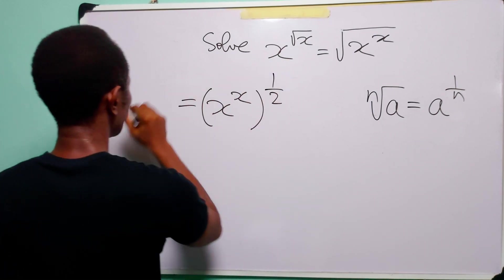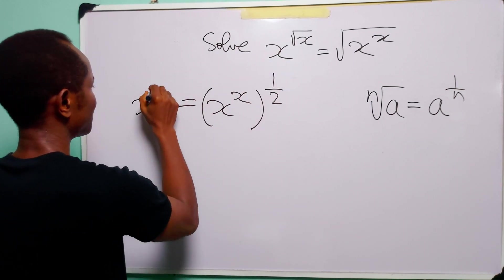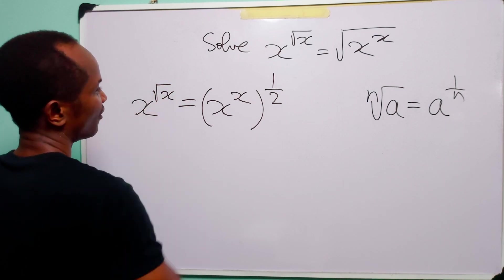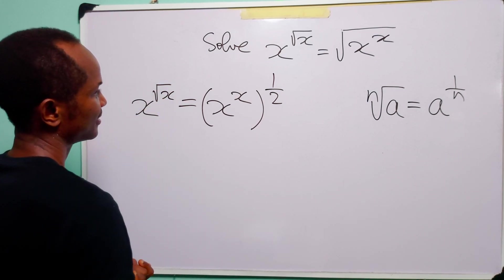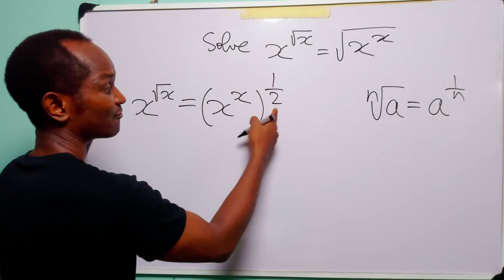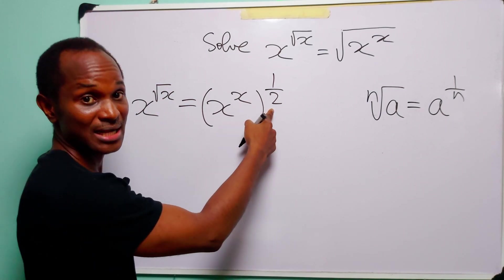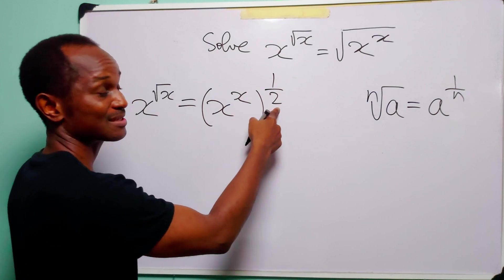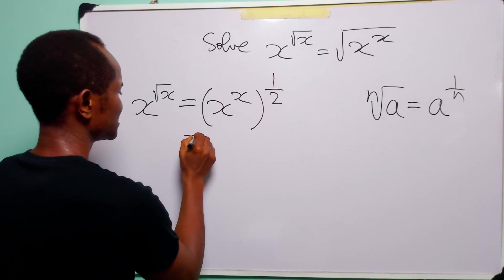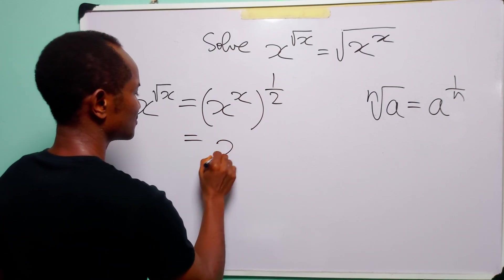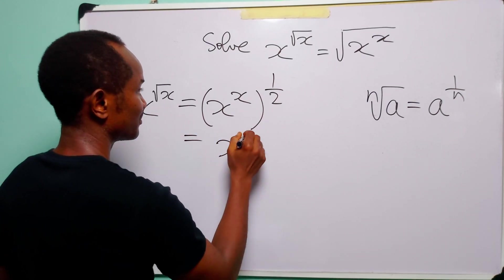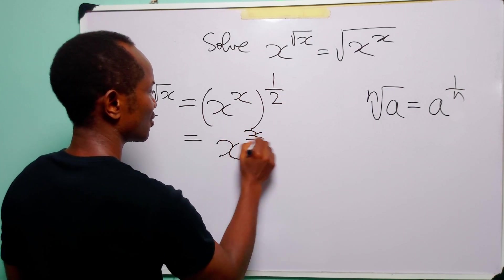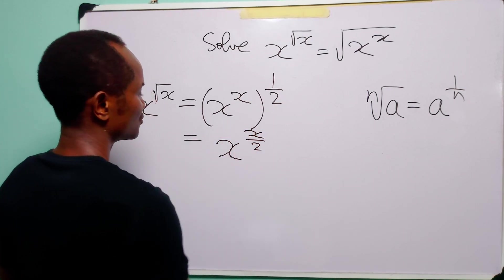On the left hand side we have x to the power square root of x. When we have two exponents like this, what we do is multiply the two of them. So this is equal to x to the power x times half, which is x over 2.